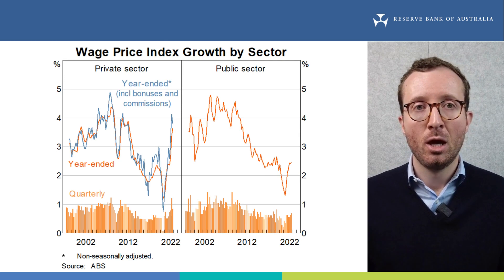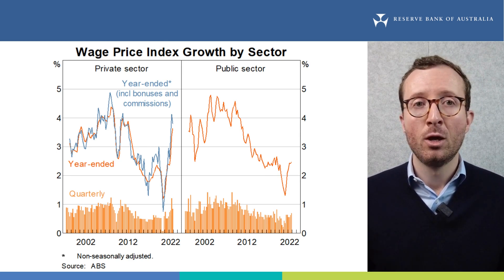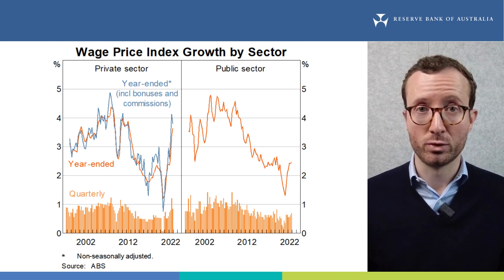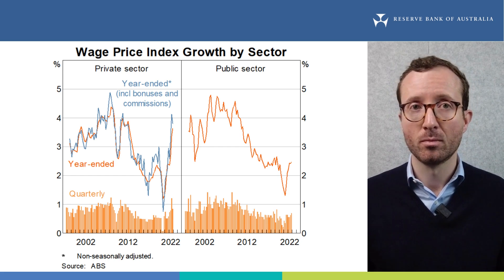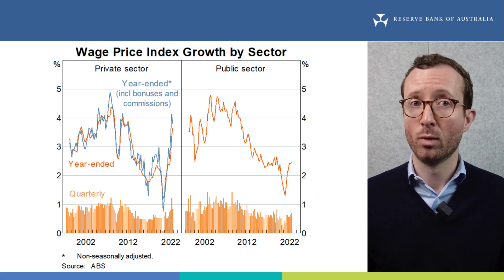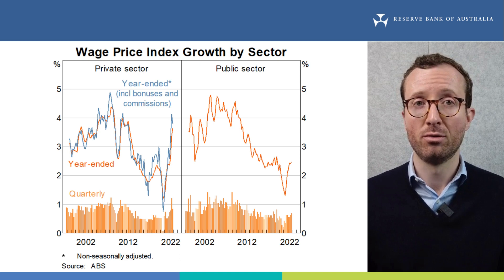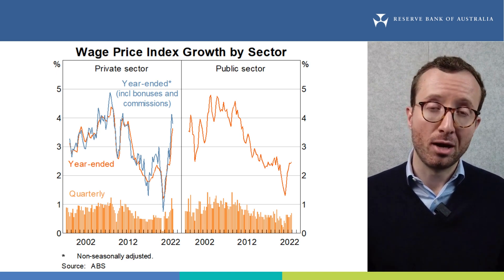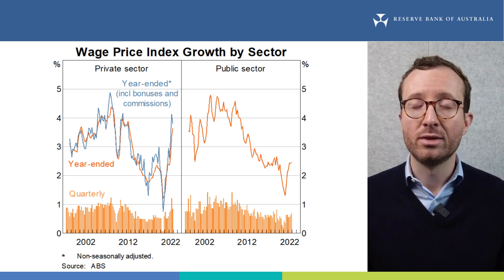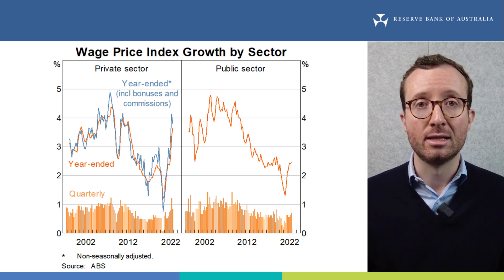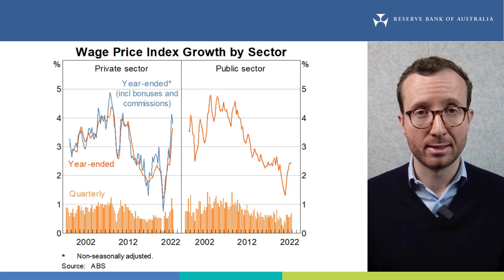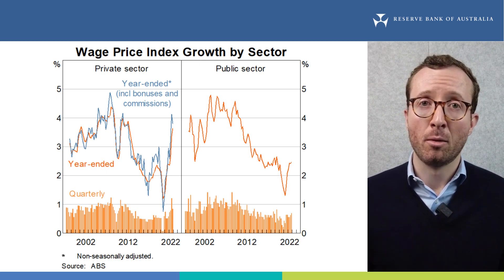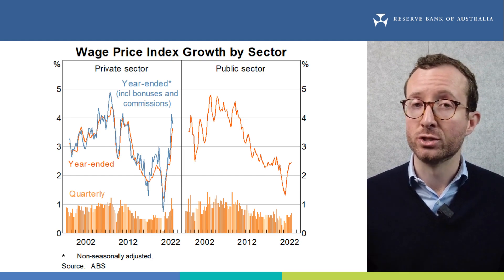Let's look now at wages. Wages growth was solid in the December quarter, with the wage price index increasing by 0.8% in the quarter and 3.3% in year-ended terms. This was the highest rate of year-ended wages growth since late 2012, and reflected tightness in the labour market and high inflation outcomes. This chart shows the split of wages growth in the private and public sectors. Over the year to December 2022, wages in the private sector grew more quickly than those in the public sector, telling us it is private sector wages that have driven overall wages growth.